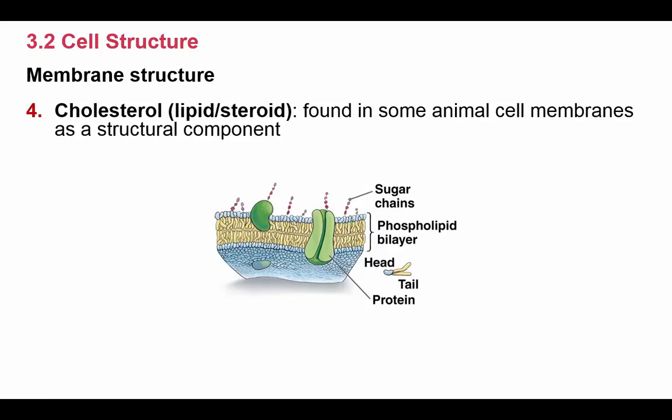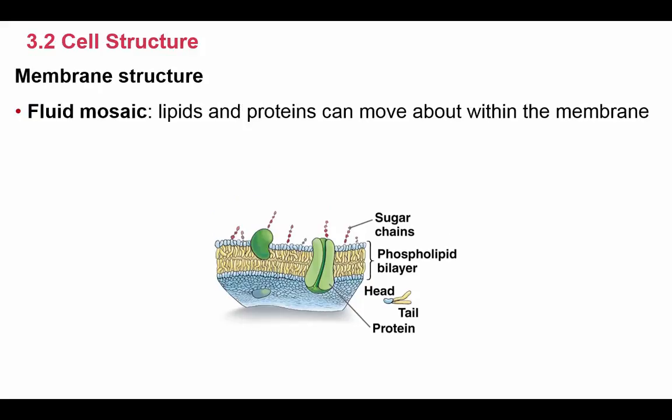The fourth component of the plasma membrane is cholesterol. Cholesterol is a lipid — specifically a steroid — found in animal cell membranes. It adds an extra structural component by hardening or stiffening the membrane. Finally, the cell membrane is considered a fluid mosaic because it's composed of both lipids and proteins that are continually moving, forming a mosaic piece of artwork that is fluid because they're constantly in motion.